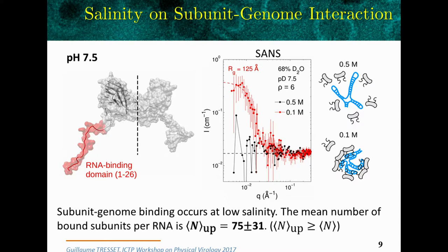More importantly, we can estimate how many subunits are bound to each RNA molecule from the I₀. In this case, we estimate a mean number of 75 subunits per RNA, with a large uncertainty due to experimental error. We must also recall that the genome is made of four segments of RNA, and this polydispersity is included in the uncertainties.